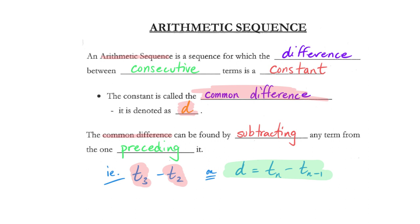That notation would represent, say, term three subtract term two, or term 20 subtract term 19. We find the common difference by taking any term and subtracting the one that comes before it. For us to recognize the common difference is a huge part of being able to address arithmetic sequences.